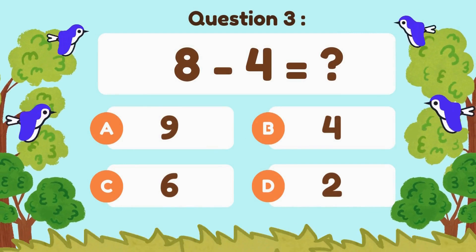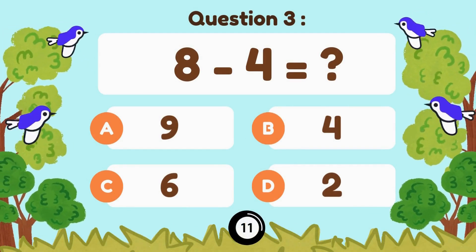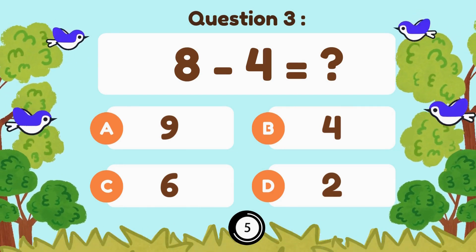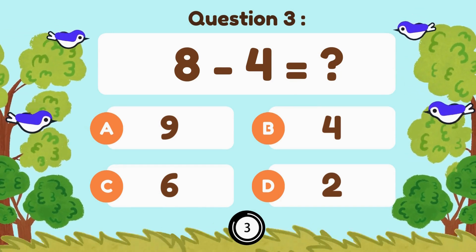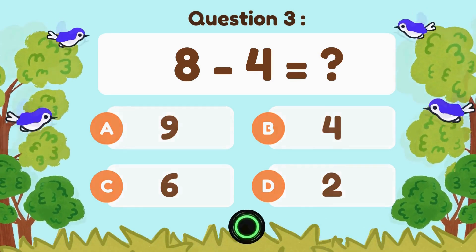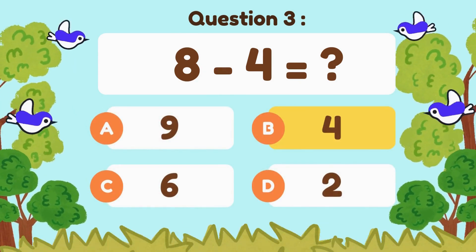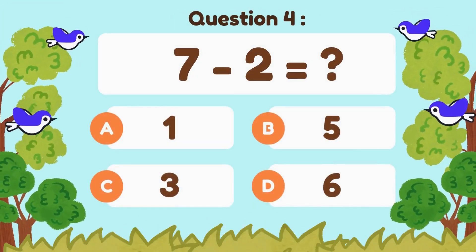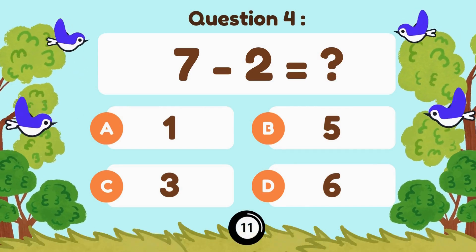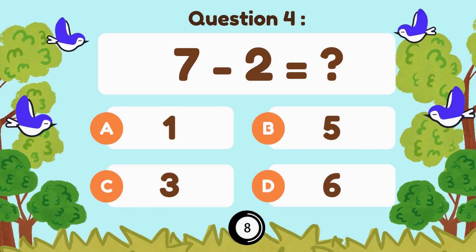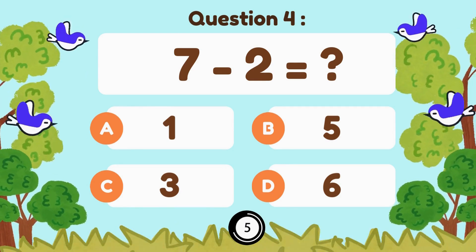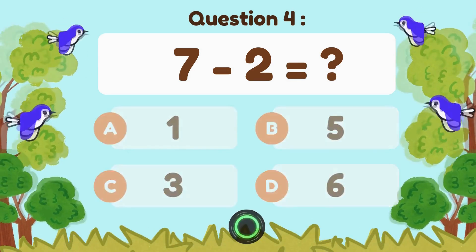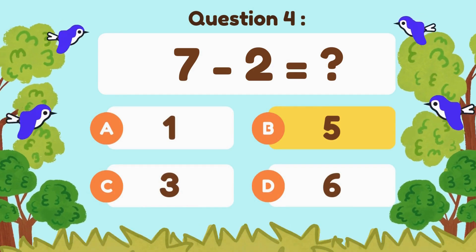8 minus 4... 8 minus 4 equals 4. 9 minus 7... 7 minus 2 equals 5.